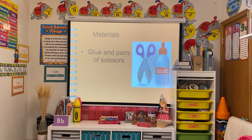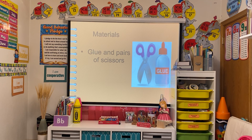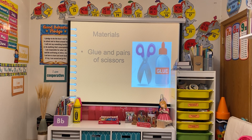Other materials are glue and pairs of scissors. With glue, normally I give them only the small round ones. With the pair of scissors, we have to be very careful if they have not used scissors before — it may be their first time. We need to tell them to be careful and demonstrate how to put their fingers inside the two circles, or the handles of the scissors.